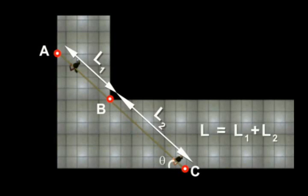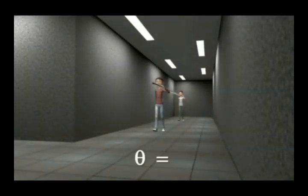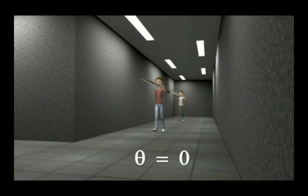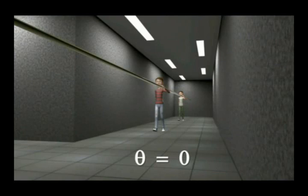Now if theta is equal to 0, then the pipe is completely inside the wider hallway and we can see that as theta tends to 0, then L tends to infinity, which means that if the pipe is completely in the broader hallway and there is no turn, then an infinitely long pipe can be carried through such a hallway.